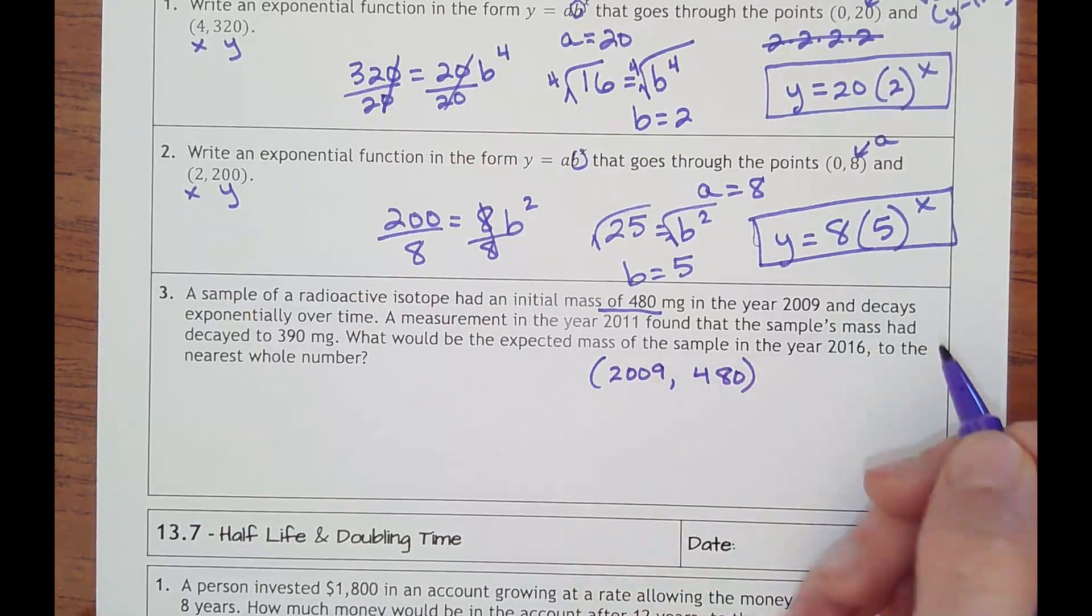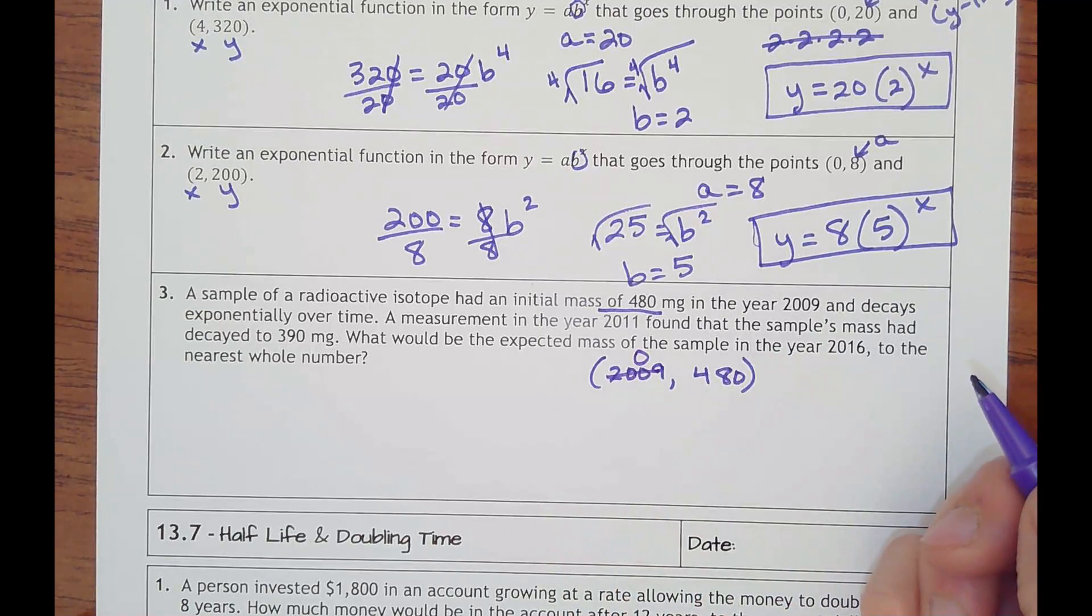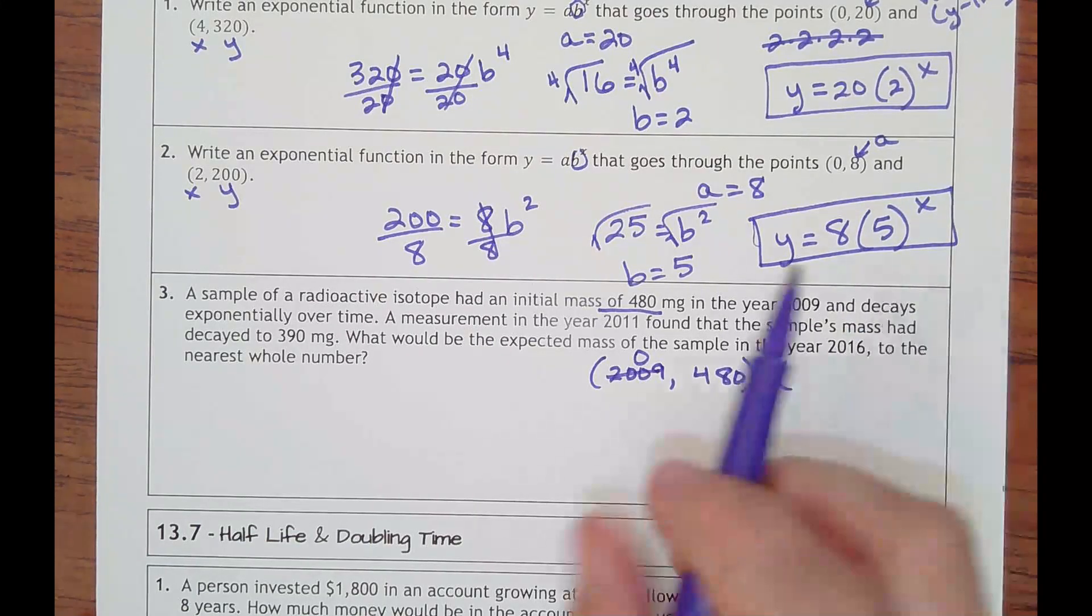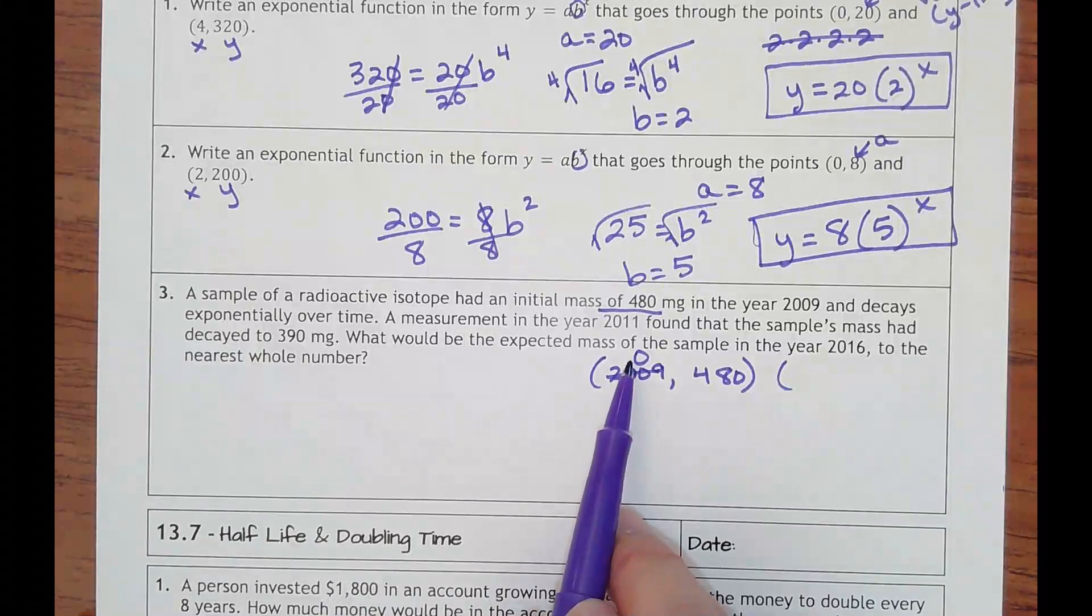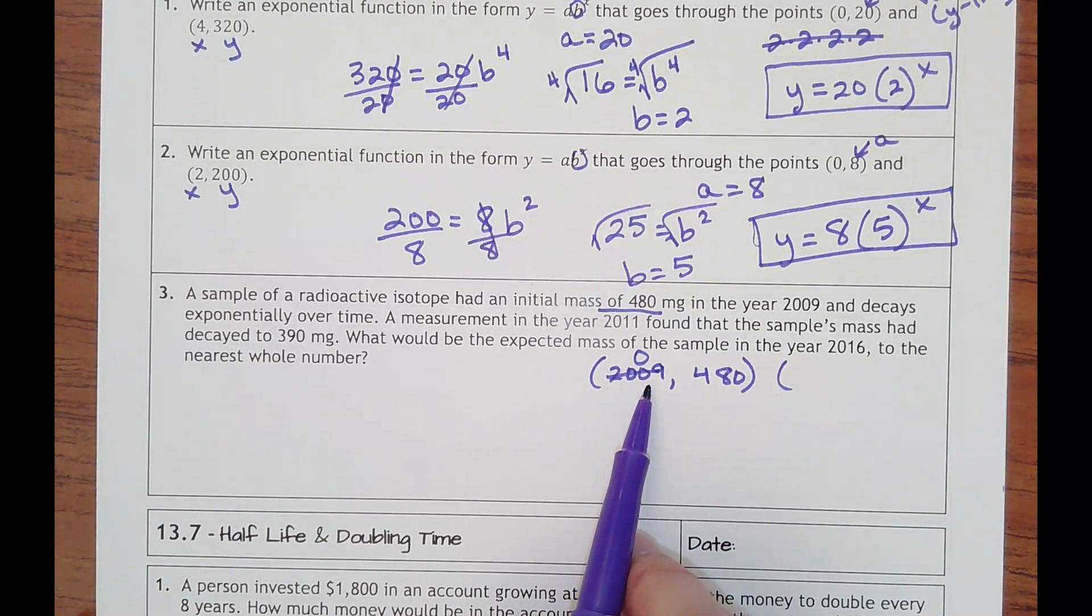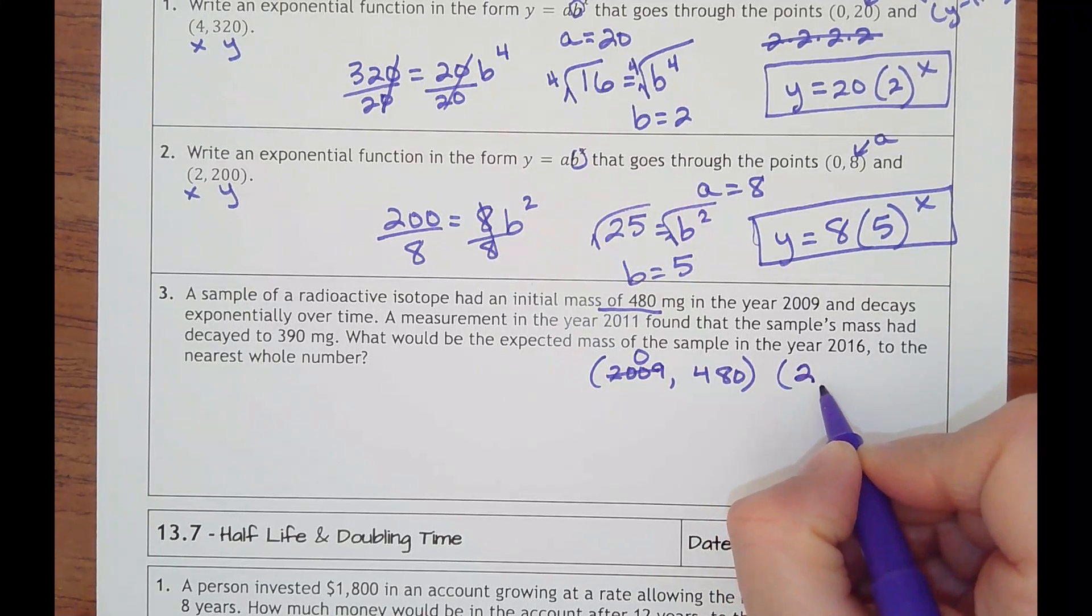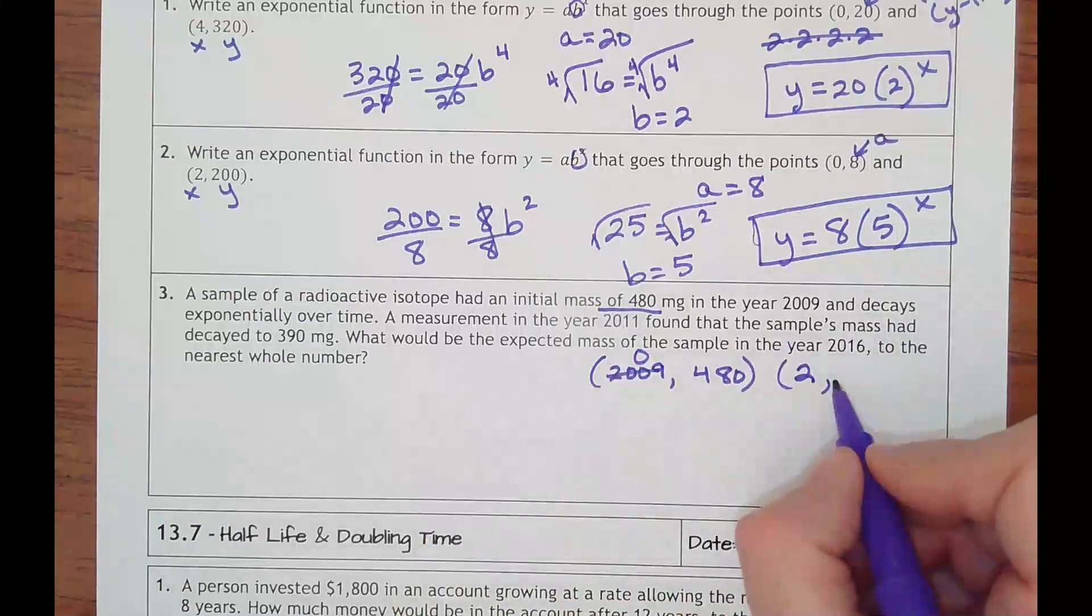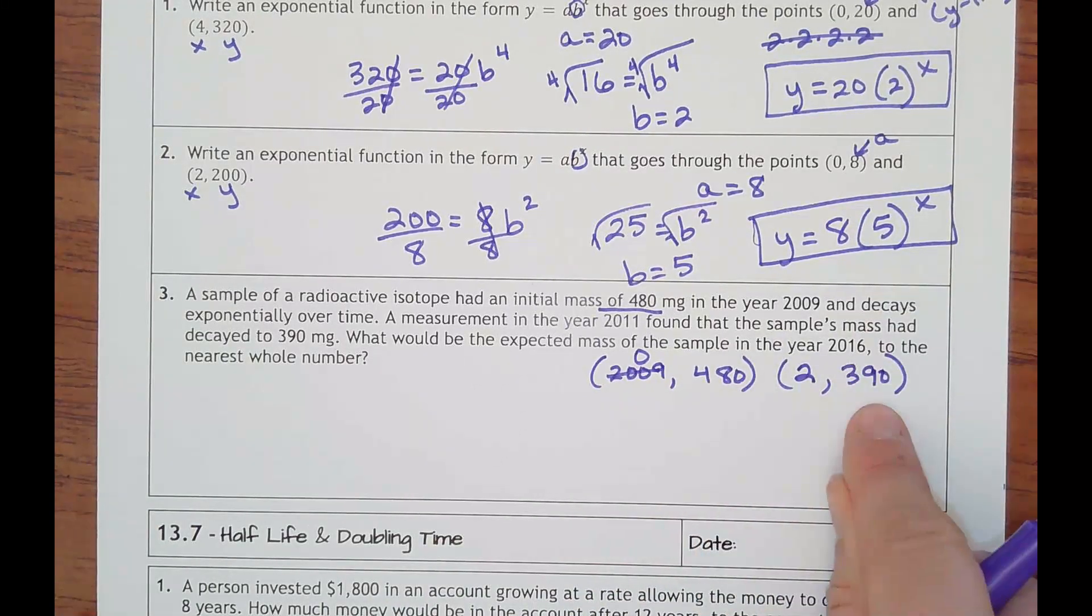What's much easier is to make 2009 actually year zero because that's when the study apparently started. So that's one point. Then my other point would say that in the year 2011 - I don't want to write 2011 since I made 2009 zero. So how many years after 2009 is 2011? It would be two years after that. And its mass was 390 milligrams. So it's apparently decaying because it's going down.